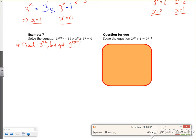So I'm going to split that 3^(2x+1). So 3^(2x+1) is the same as 3^(2x) multiplied by 3^1.